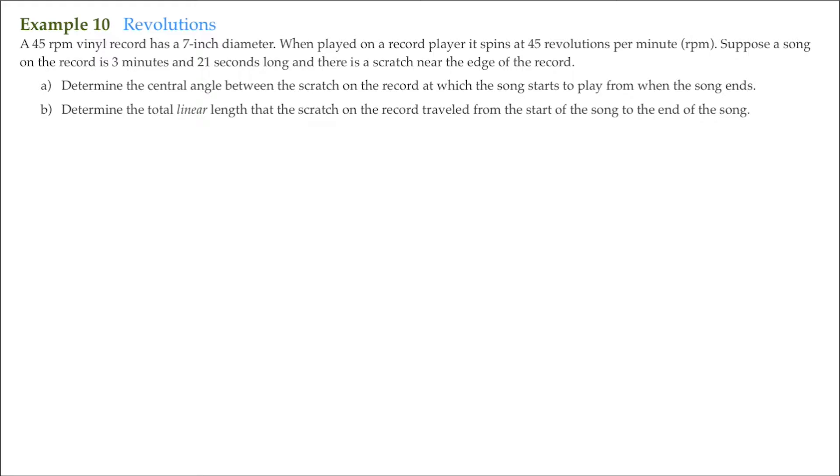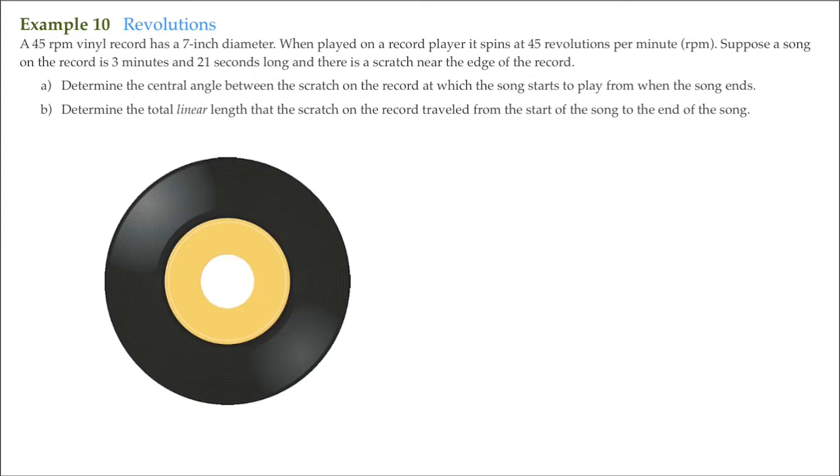So a couple of things to point out. Here I have a graphic of a record, a 45 RPM record. As you can see, the record looks very similar to a unit circle. As a matter of fact, I can even place quadrants in there and it looks just like a unit circle.